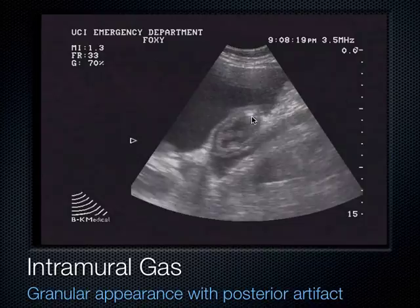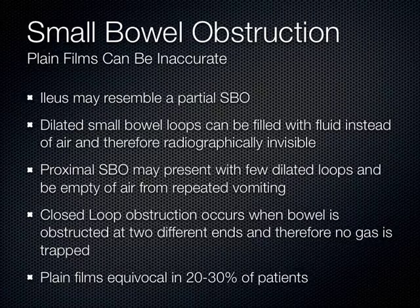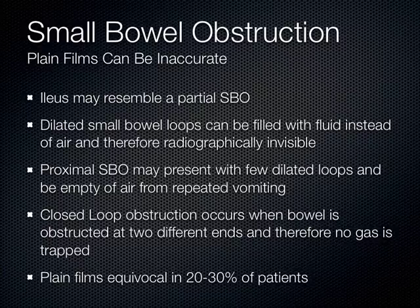Small bowel obstructions — typically we say get an x-ray, but x-rays need to see an air-fluid level. If the patient doesn't have air and fluid together in the intestines, you will miss this diagnosis on x-ray. That's why x-rays have terrible test characteristics for small bowel obstruction. A closed loop obstruction, where bowel is twisted on both sides with fluid only in the middle, is classically missed on x-ray. Proximal obstruction where the patient is vomiting all the air — also missed. Ultrasound is really good at picking up both. It has much better test characteristics than x-ray, though not as good as CT scan.